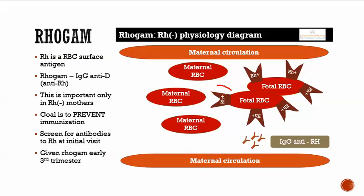It's a protein, an antigen that sits on top of red blood cells. And the only time you really care about this is when you have an RH negative mother. If she sees RH antigens sitting on a fetal red blood cell, her immune system is going to say this is something foreign, and then can become immunized against that and make antibodies against it.